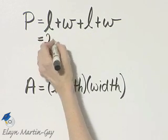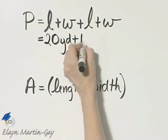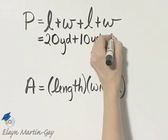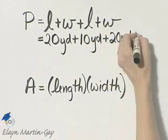The length is given to be 20 yards plus the width is 10 yards, plus the length is 20 yards, plus the width is 10 yards.